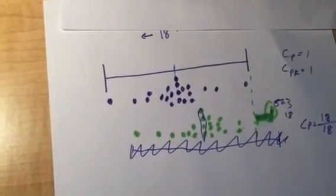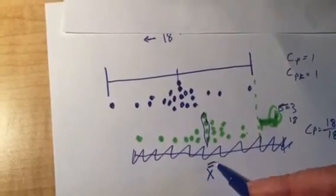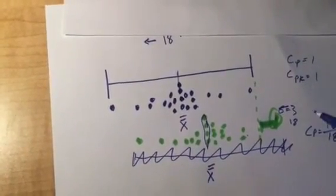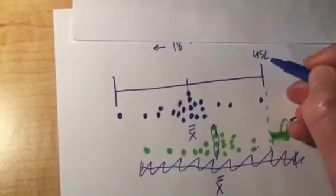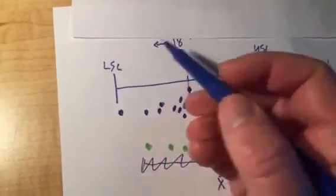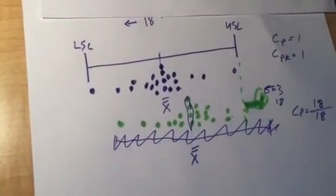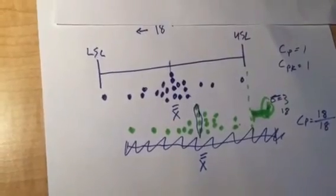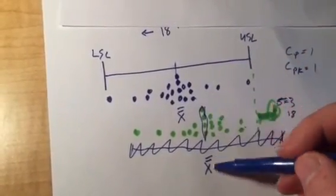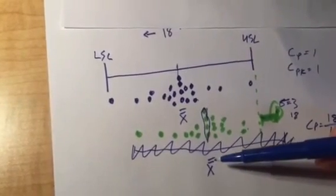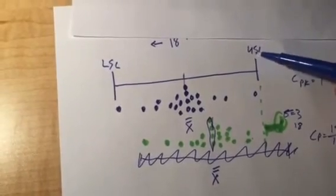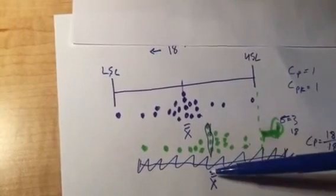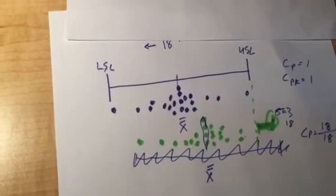C sub PK takes into account the process average and where the goal posts are and how those relate to each other. So we can see our process averages here, and we can think about the right goal post as the upper specification limit, and the left goal post as the lower specification limit. And again, C sub PK, unlike C sub P, takes into account where the process average is with respect to the goal post. So if you look at the formula, it takes into account X bar bar and the upper specification limit and the lower specification limit. And it's going to show us a difference between these two kickers.